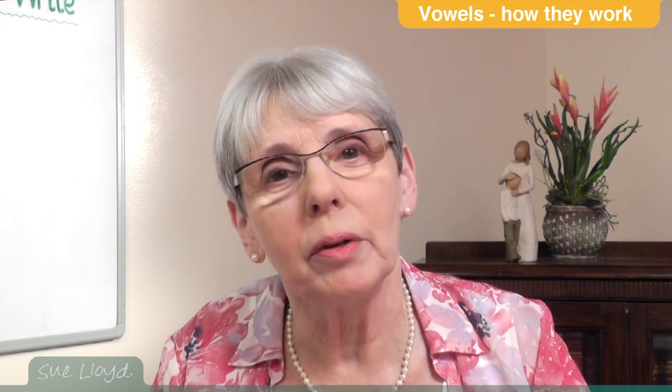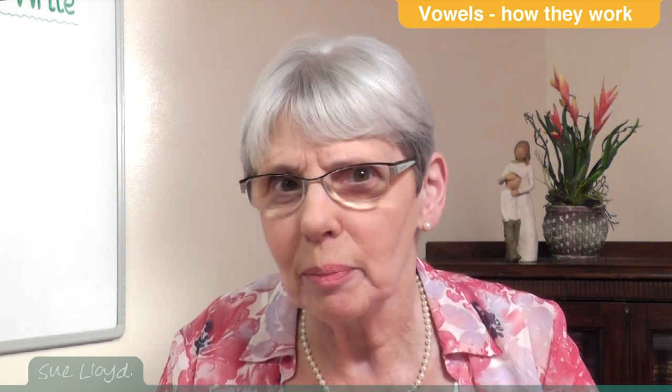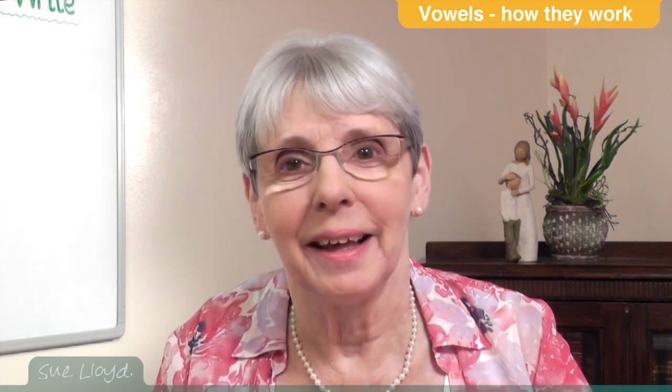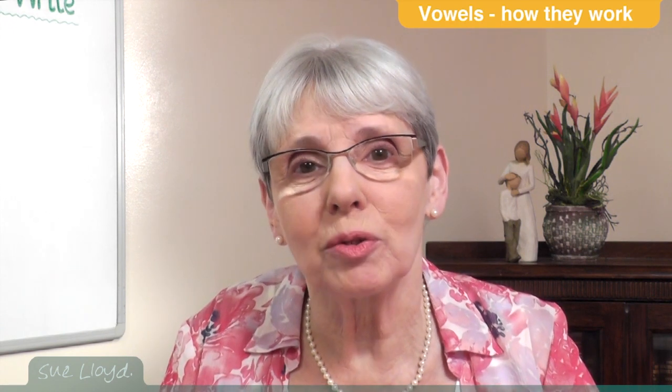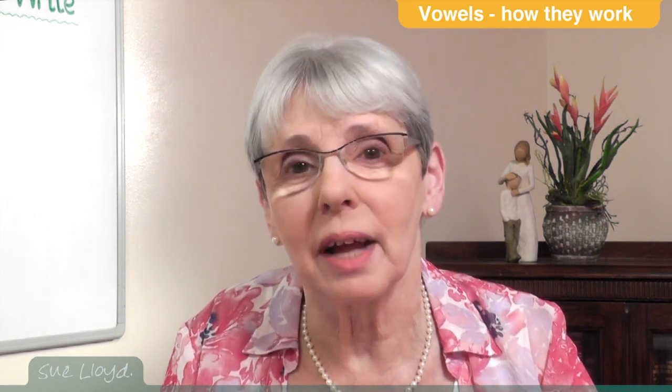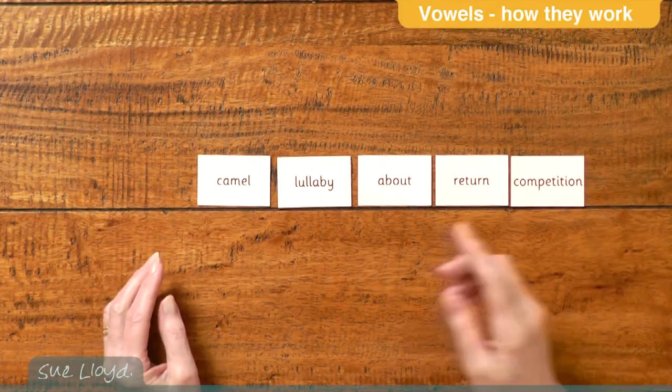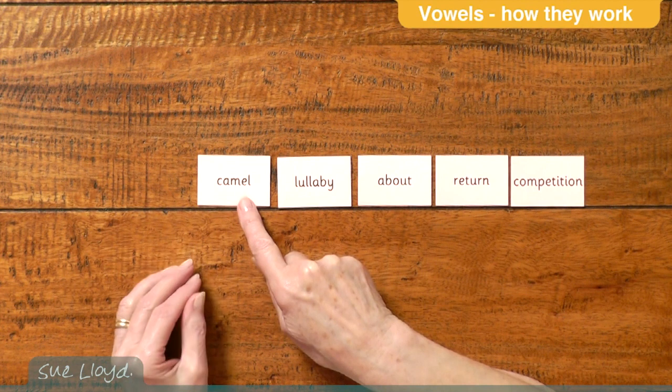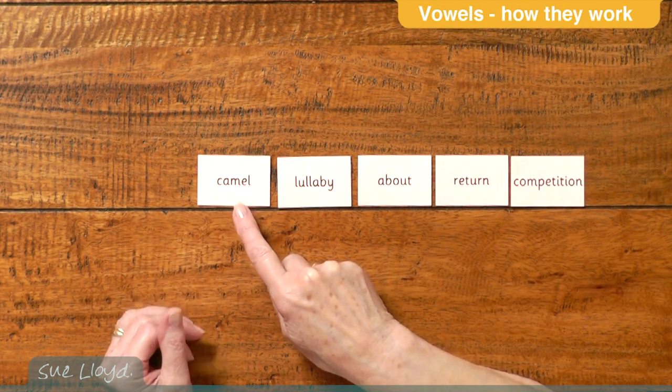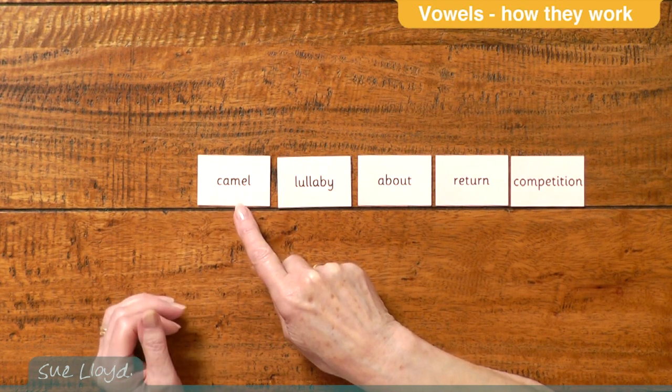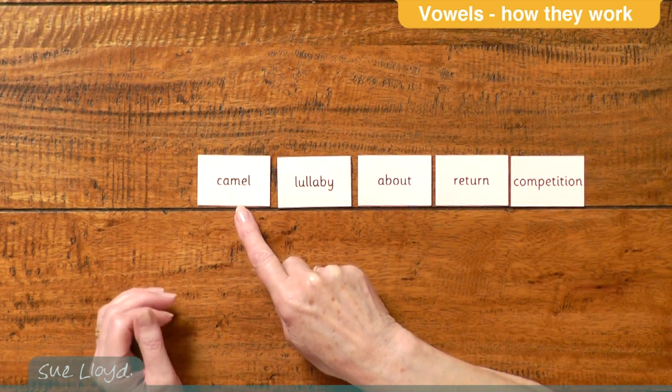A schwa is a swallowed vowel sound that is usually pronounced like an uh. It usually comes in an unstressed syllable in longer words that have more than one syllable. Here are some examples. We've got camel - it's the e that is swallowed. It goes camel. We don't say camel or Camille, but we go camel. It gets swallowed.